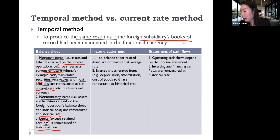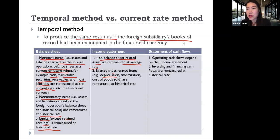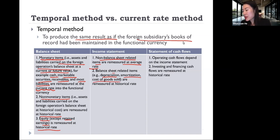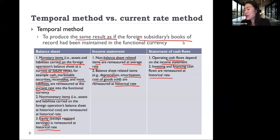For the income statement under the temporal method, non-balance-sheet-related items are measured at the average rate, and balance-sheet-related items — for example, depreciation, which is related to PP&E, amortization related to intangibles, and cost of goods sold related to inventory — those are measured at historic rate. On the statement of cash flows, operating cash flow depends on the income statement, while investing and financing cash flows are remeasured using the historic rate.